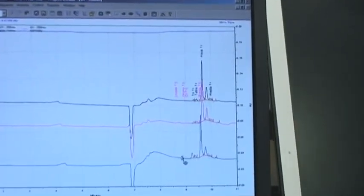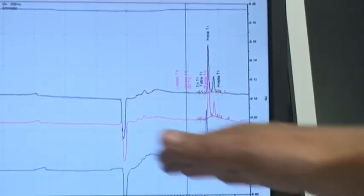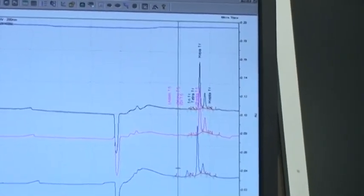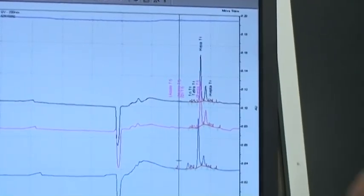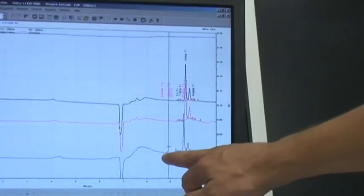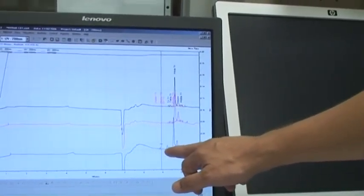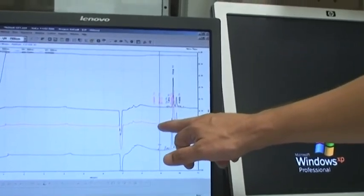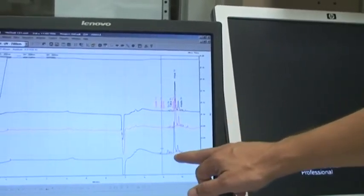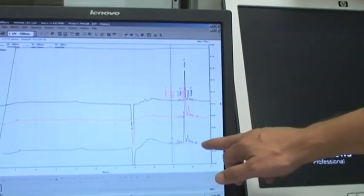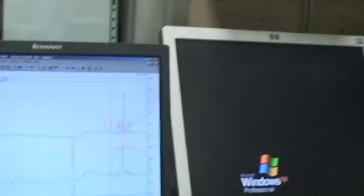These little peaks that appear at the beginning of the electropherogram are the under-sialylated forms of transferrin, and sometimes the diagnosis is achieved by the analysis of some of these very little peaks compared with a normal patient. This is a normal patient and this is a patient with a congenital disorder of glycosylation. The advantage of this system is that we are able to quantify the different fractions of these under-sialylated forms.